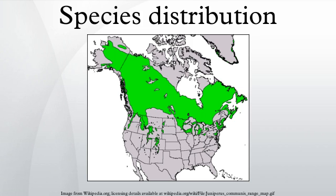Regular or uniform distribution, less common than clumped distribution, also known as even distribution, is evenly spaced. Uniform distributions are found in populations in which the distance between neighboring individuals is maximized. The need to maximize the space between individuals generally arises from competition for a resource such as moisture or nutrients, or as a result of direct social interactions such as territoriality. For example, penguins often exhibit uniform spacing by aggressively defending their territory. Plants also exhibit uniform distributions, like the creosote bushes in the southwestern United States. Salvia leucophylla is a species in California that naturally grows in uniform spacing.